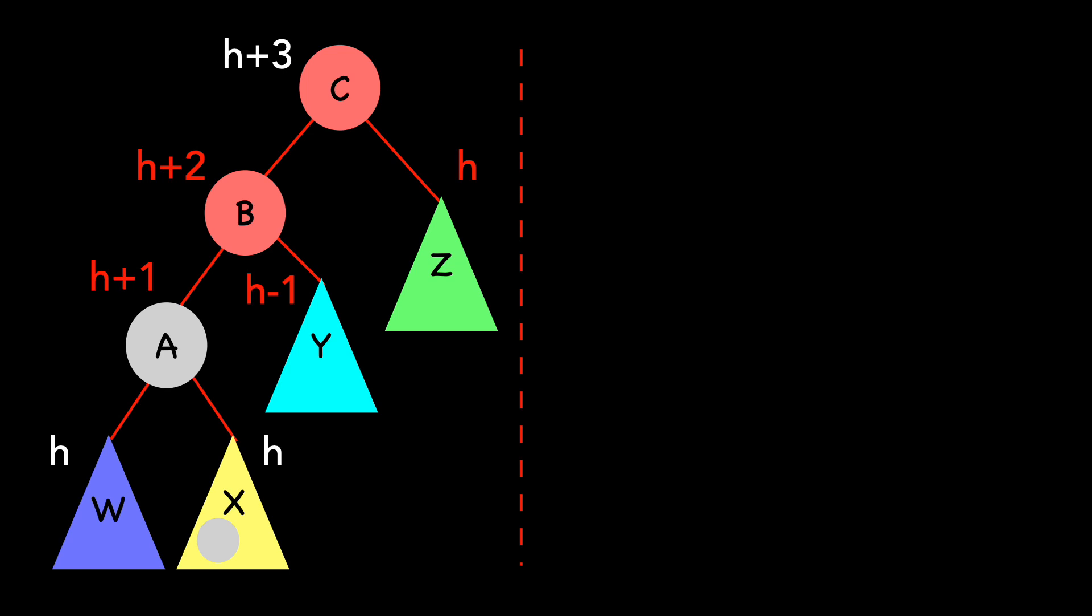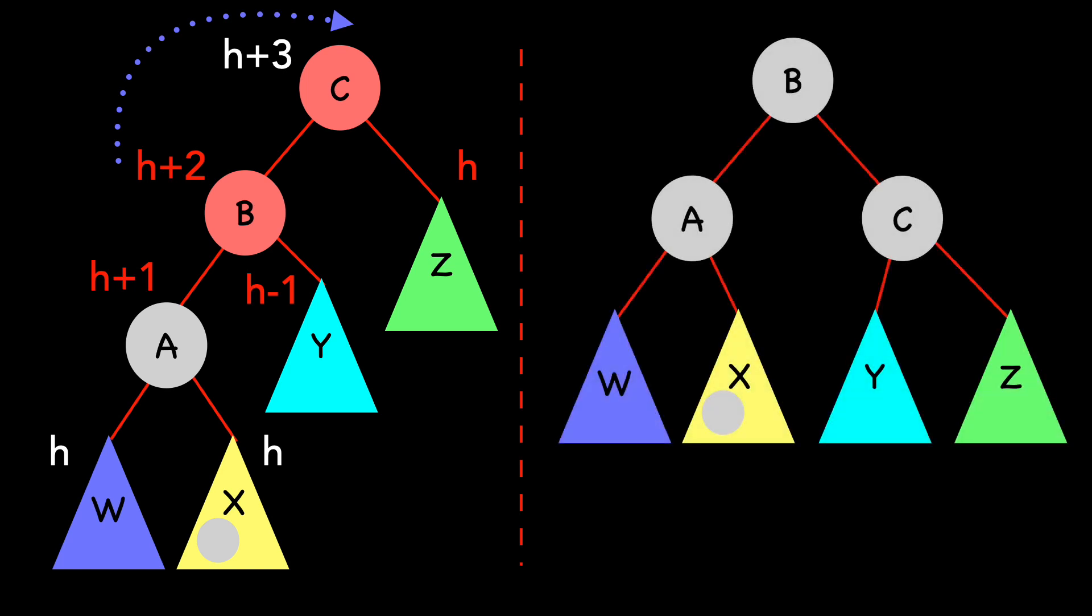We perform a right rotation on node C, resulting in this tree. Again, filling in the heights, starting with the subtrees. A and C now both have a height of H plus 1, and B is the height of H plus 2. We're left with a valid AVL tree.